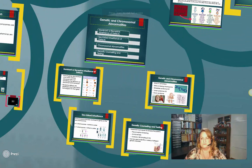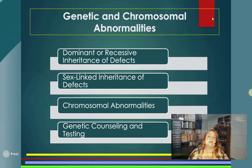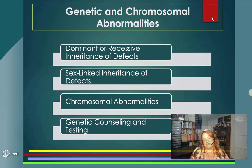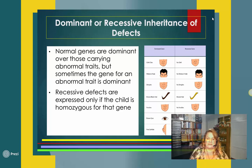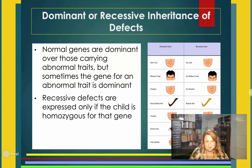Now let's talk about genetic and chromosomal abnormalities. Mutations are normal — they happen — but how we deal with them makes a difference. This section covers dominant-recessive inherited defects, sex-linked inheritance of defects, chromosomal abnormalities, and genetic counseling and testing. Recessive defects are expressed only if the child is homozygous for that gene — meaning they have two of the same recessive allele. Instead of a big B, two small b's, and you'll see the recessive.